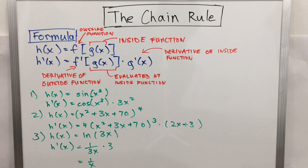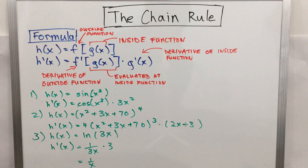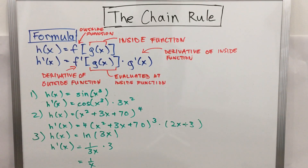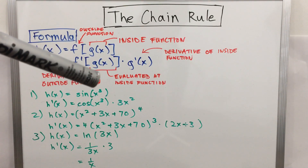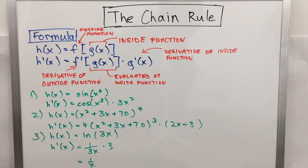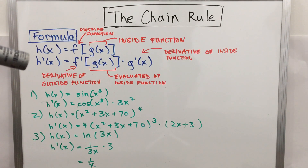Applying the formula: sine turns into cosine, evaluated at the inside function x³ — so that stays the same. Then you multiply by g'(x), which is the derivative of the inside function x³, giving you 3x². That was a direct application of the chain rule formula — pretty straightforward.